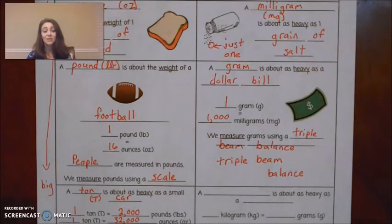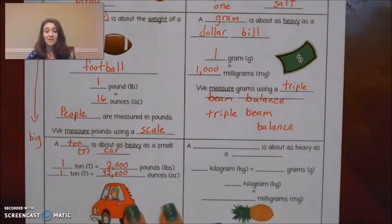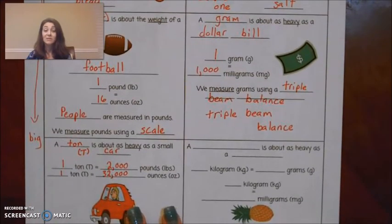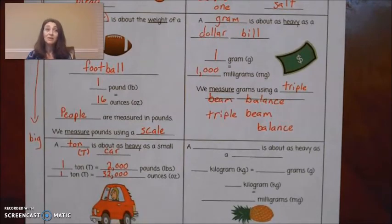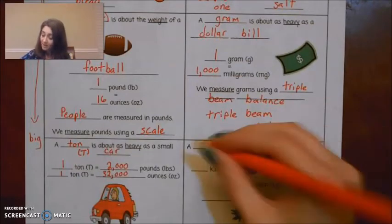Okay, the biggest unit we're going to talk about for mass in the metric system is a kilogram. Just like we talked about a kilometer, kilometer, kilogram. A kilogram. The abbreviation is kg.